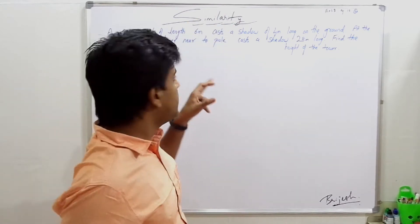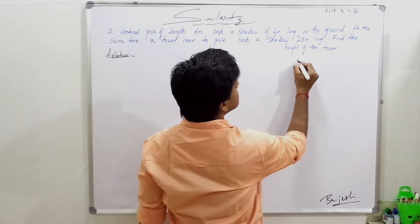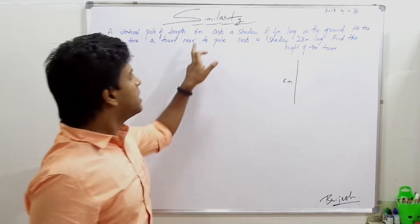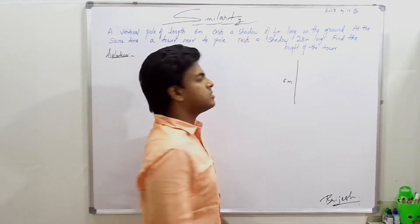A vertical pole of length 6 meters casts a shadow of 4 meters long.